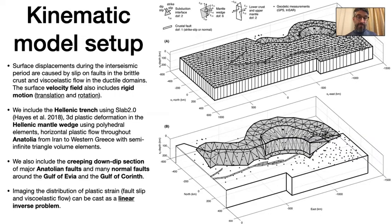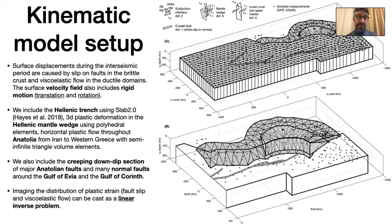We also allow horizontal plastic flow throughout Anatolia from Iran to northern Greece with semi-infinite triangle elements. We also include creep on the deep section of major faults in Anatolia and the creeping deep extension of normal faults around the Gulf of Corinth, Evia, and Patras in Greece. We cast the problem as a linear inverse problem to retrieve the distribution of fault slip velocities on the faults and the megathrust, and the distribution of plastic strain rate throughout the region.